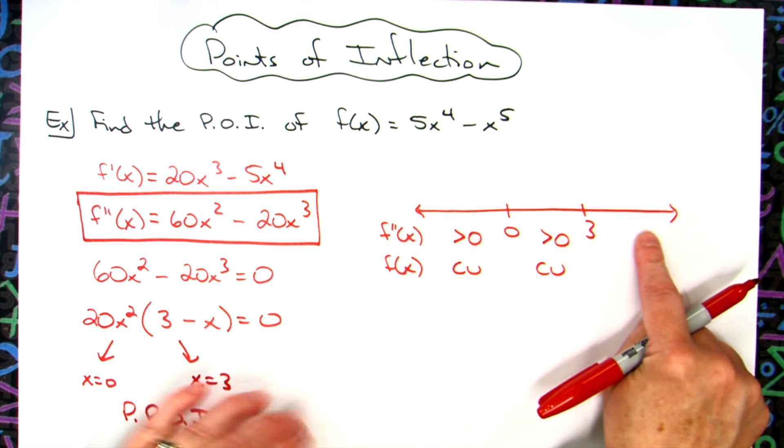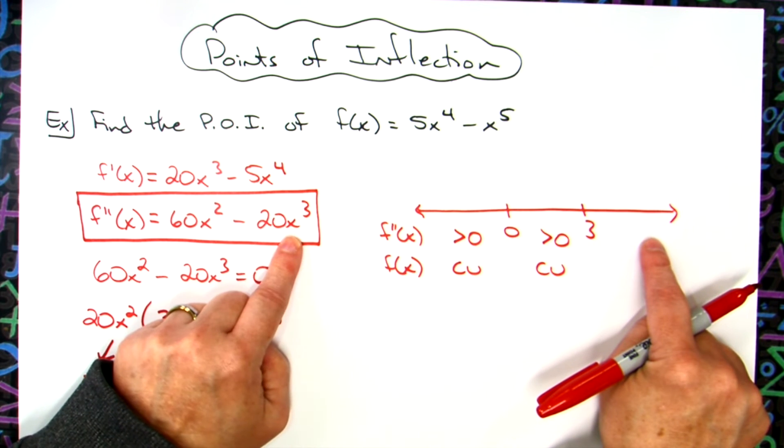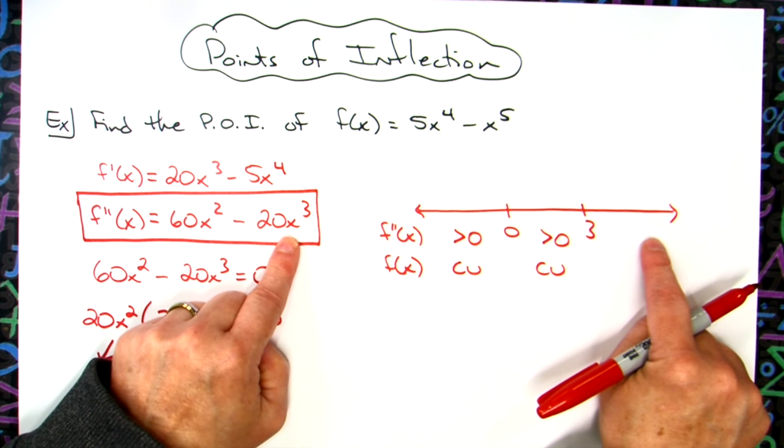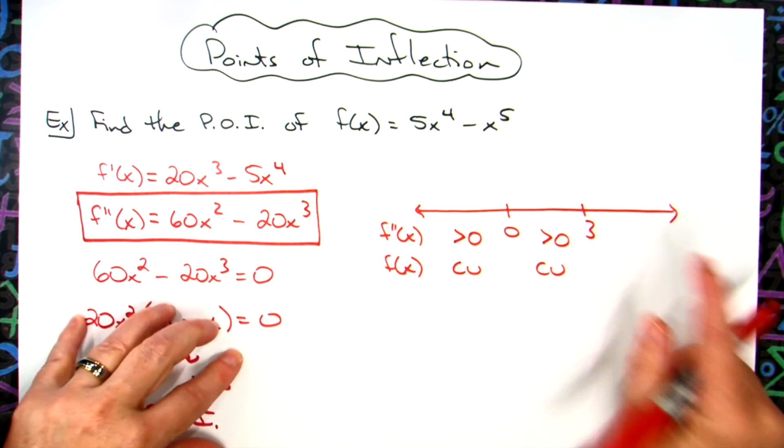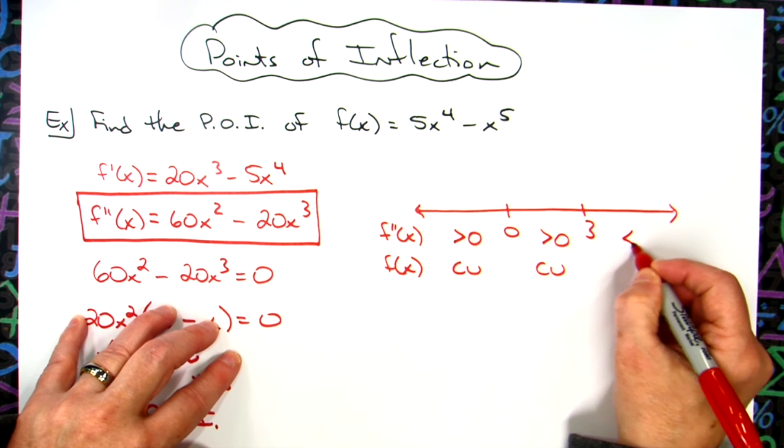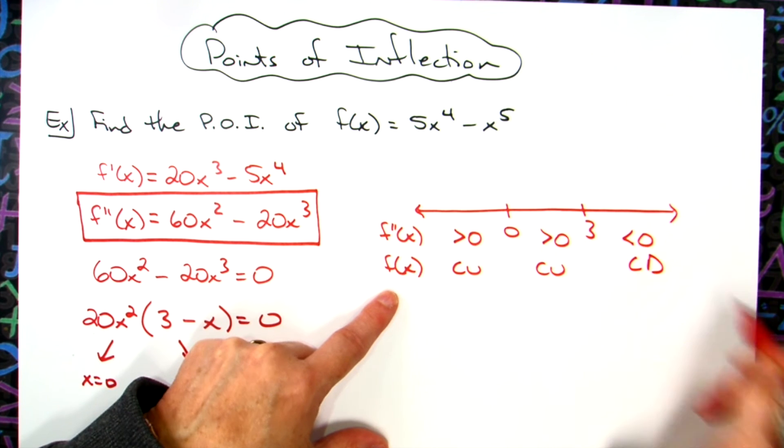Now picking a really large positive number, this will square it and be positive overall, but now I'm going to cube that number which is going to make it bigger. Multiplying by that 20, when I subtract there I will have a negative number or less than zero. That's going to mean my original function is concave down.